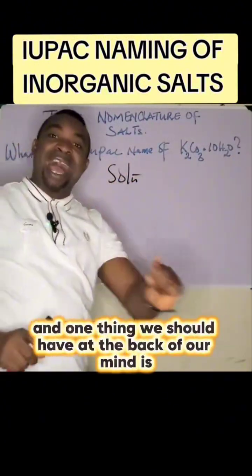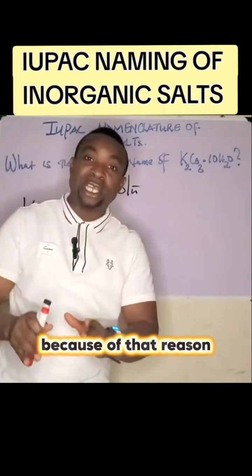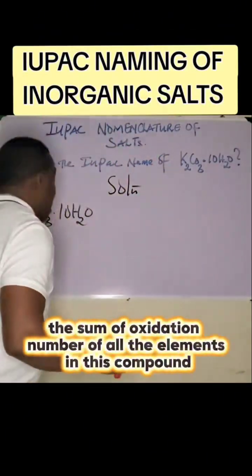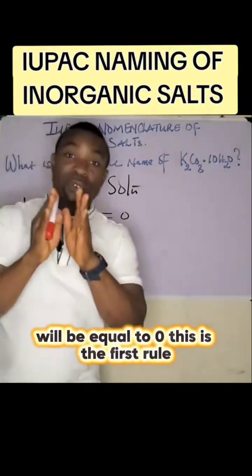One thing we should have at the back of our mind is this compound is a neutral compound. Because of that reason, the sum of oxidation numbers of all the elements in this compound will be equal to zero. This is the first rule.